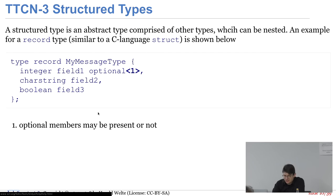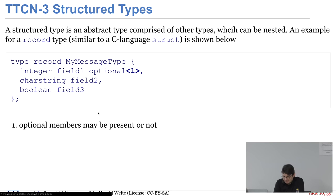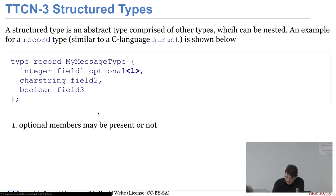Wie sehen Structure-Types aus? Das ist nicht so viel anders als eine C-Struct, mit Optional-Feldern. Man definiert einen MyMessageType, der einen optionalen Integer, einen CharacterString und einen Boolean-Wert hat. Das ist aber ein abstrakter Datentyp – er definiert noch nicht, wie das Ganze enkodiert werden soll, sondern beschreibt nur, dass er aus drei Elementen besteht.